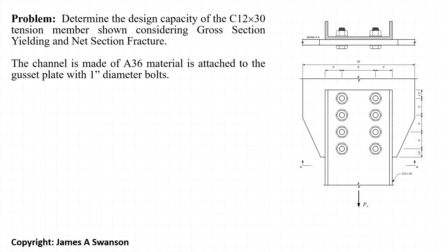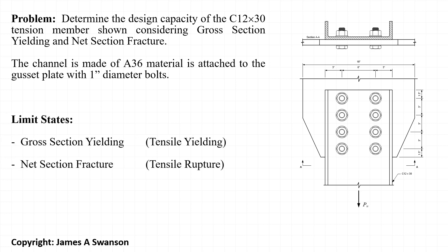In this example, we will be evaluating the design strength of a tension member made up of a C12 by 30 channel. The channel is made out of A36 material and is connected to an adjacent gusset plate using eight 1-inch diameter bolts. We will consider the two limit states of gross section yielding, or tensile yielding, and net section fracture, or tensile rupture, as it is known in the AISC specification.